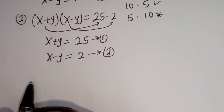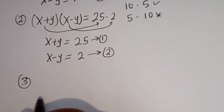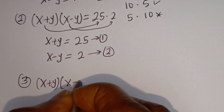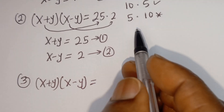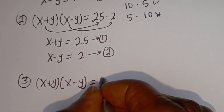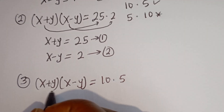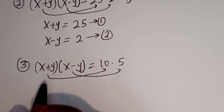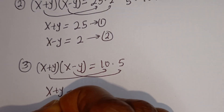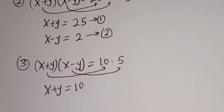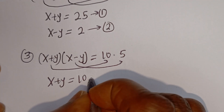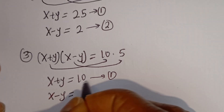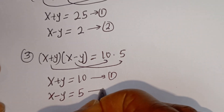Now let's consider the third case. From the third case, (x+y)(x-y) equals 10 multiplied by 5. The equations become equation 1: x plus y equals 10, and equation 2: x minus y equals 5.